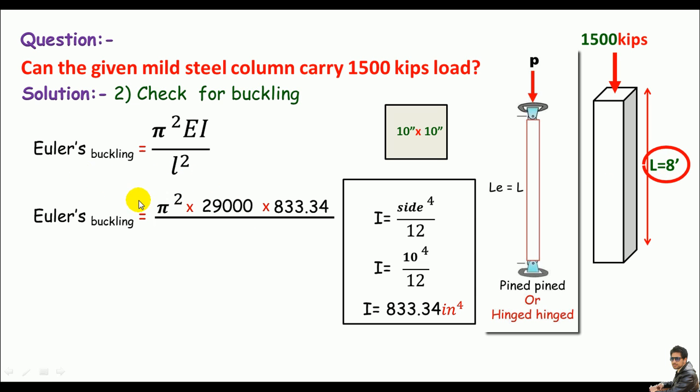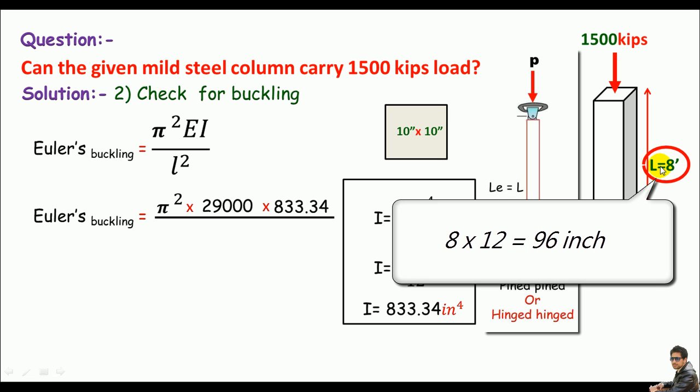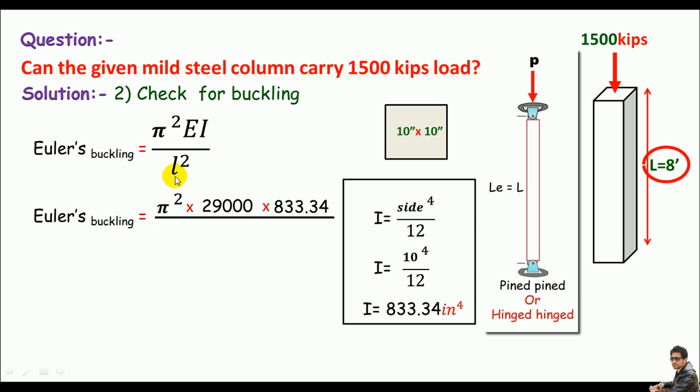The 8 is in feet, and of course some values are plugged in the earlier equation in inches, like the modulus of elasticity is in ksi and the moment of inertia is in inches. So I need the length to be in inches. Just multiply 8 with 12 to convert the length into inches. 8 times 12 is 96, so 8 feet equals 96 inches. Let's plug this value of 96 inches in this equation: 96 squared.